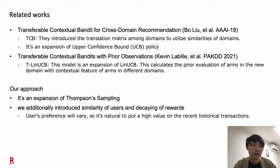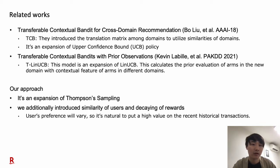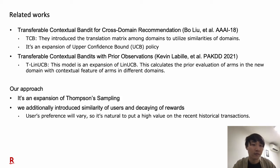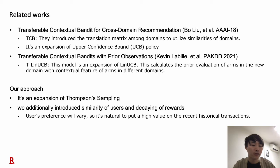Let me also describe the related work. The first key reference is transferable contextual bandit for cross-domain recommendation. Their model is called TCB, and they introduced a translation matrix among domains to utilize similarity of domains. Their model is an expansion of linear UCB. Next is transferable contextual bandit with prior observation. The model is called T-linear UCB, and this model is also an expansion of linear UCB. It calculates the prior evaluation of arms in a new domain using contextual features of arms in different domains. On the other hand, our approach is an expansion of Thompson sampling, and we additionally introduce similarity of users and discounting of rewards, because users' preferences will vary, so it's natural to put a high value on recent history of transactions.